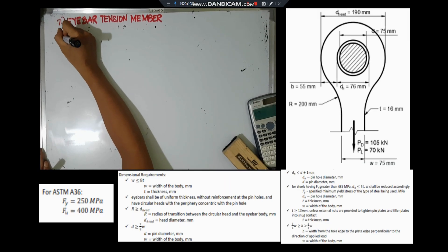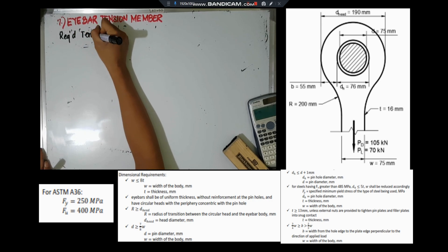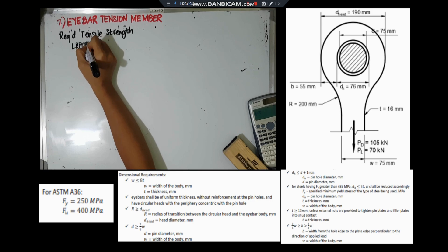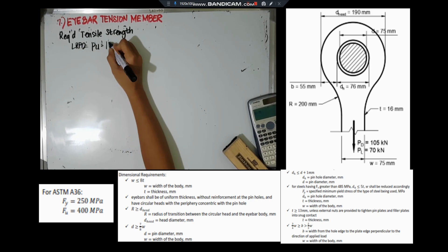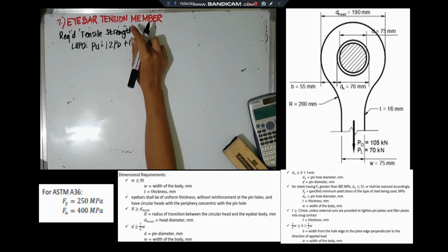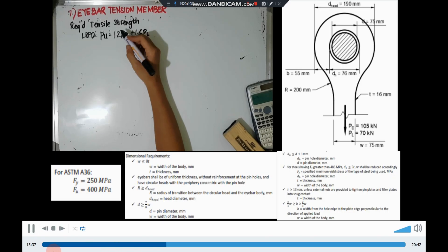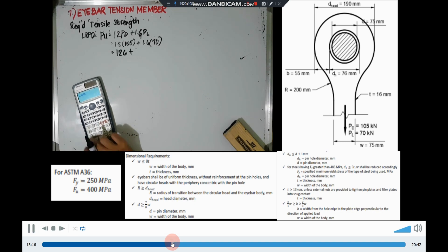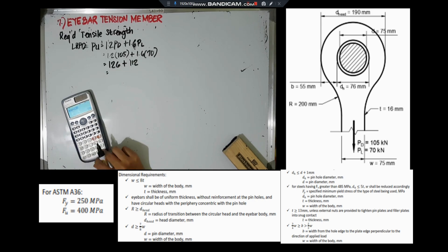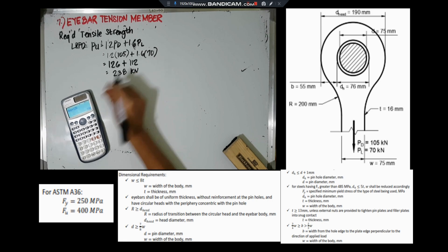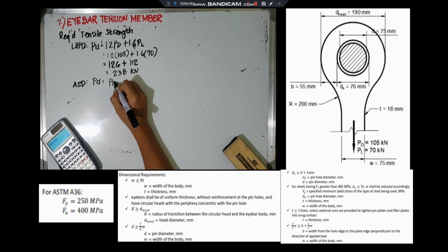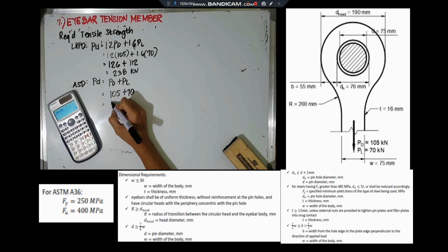We can now proceed to determining the required tensile strength. For LRFD, multiply the factor 1.2 by the dead load and 1.6 by the live load: 1.2×105 + 1.6×70 = 126 + 112 = 238kN. For ASD: 105 + 70 = 175kN.